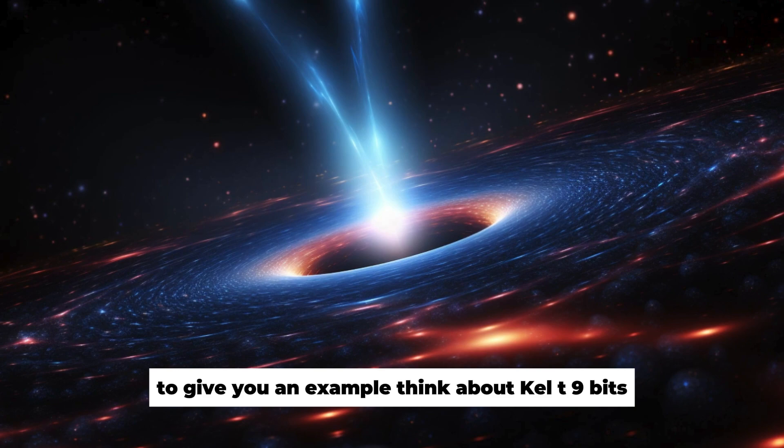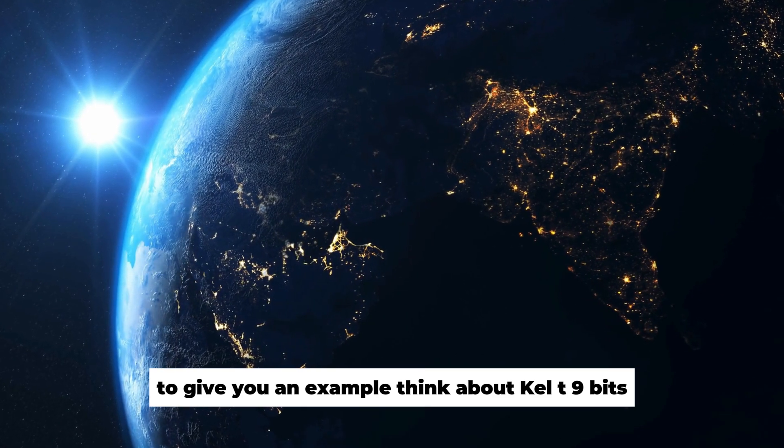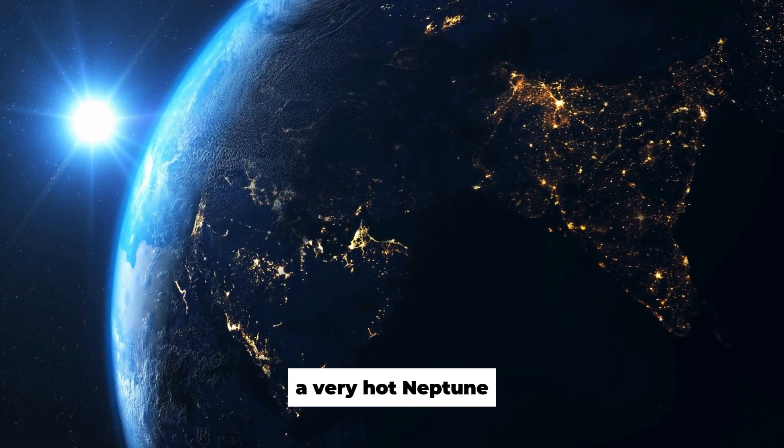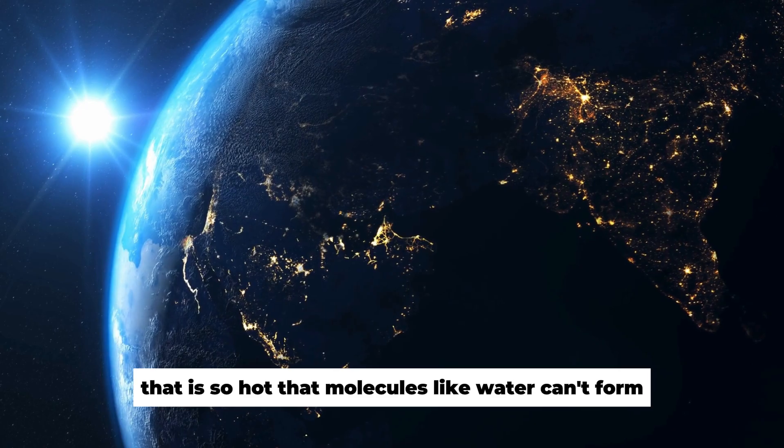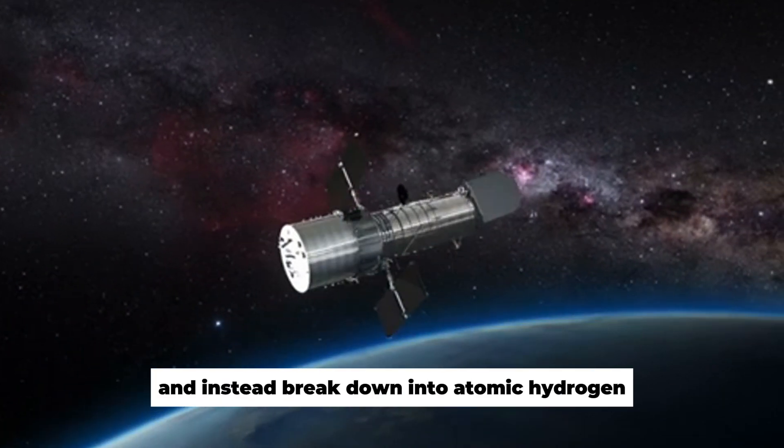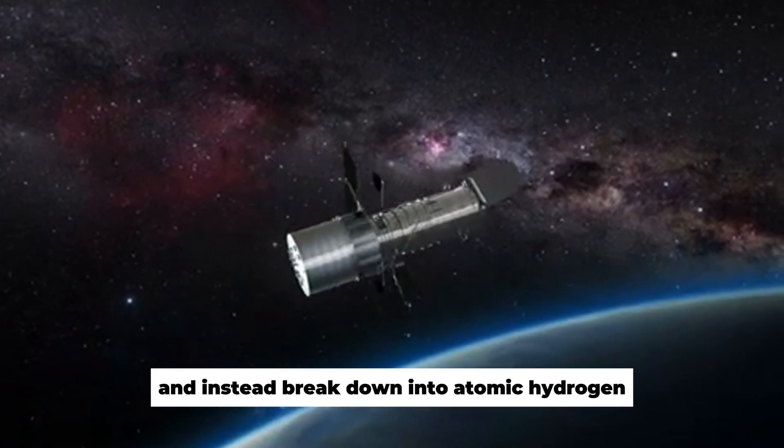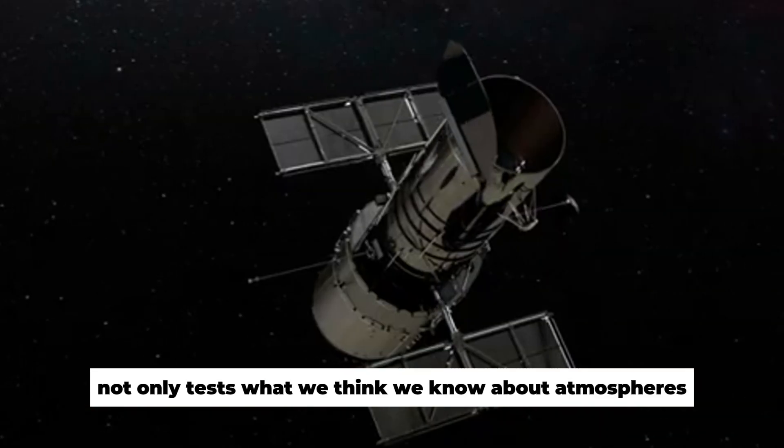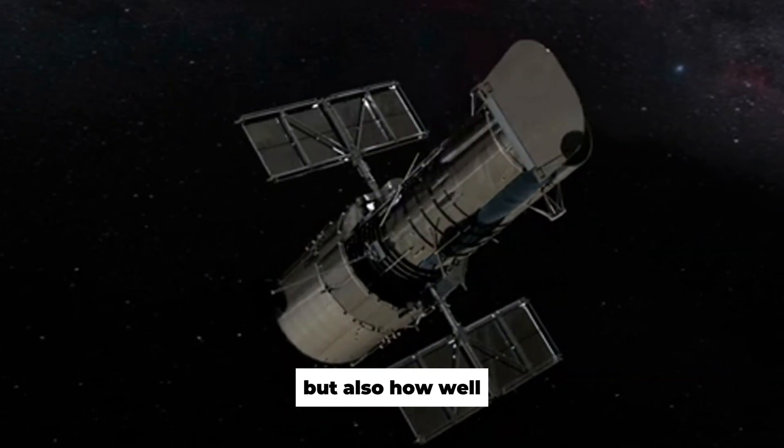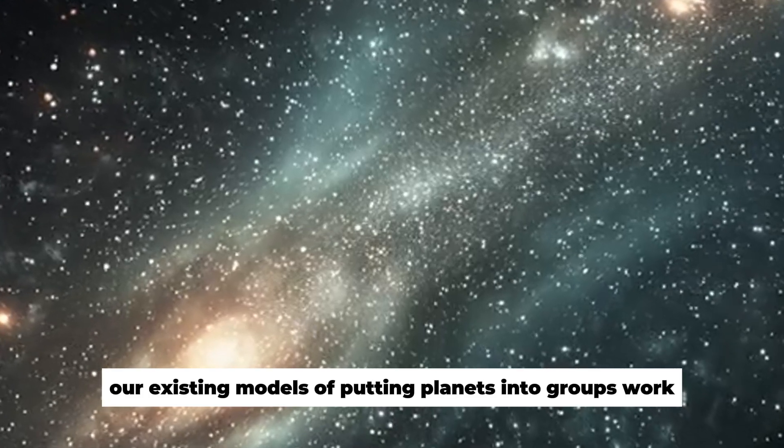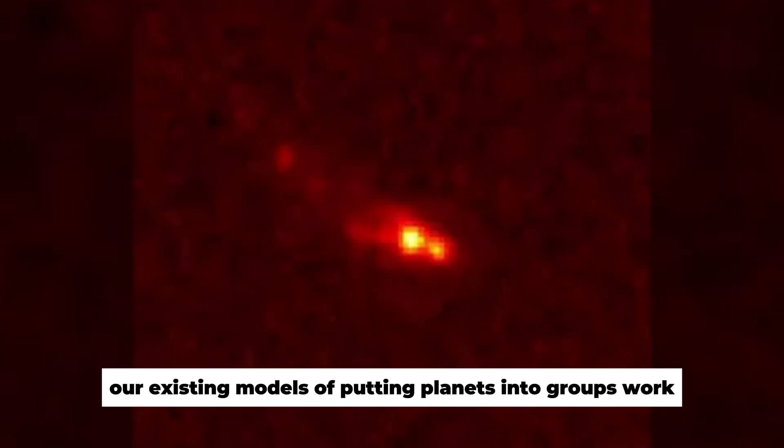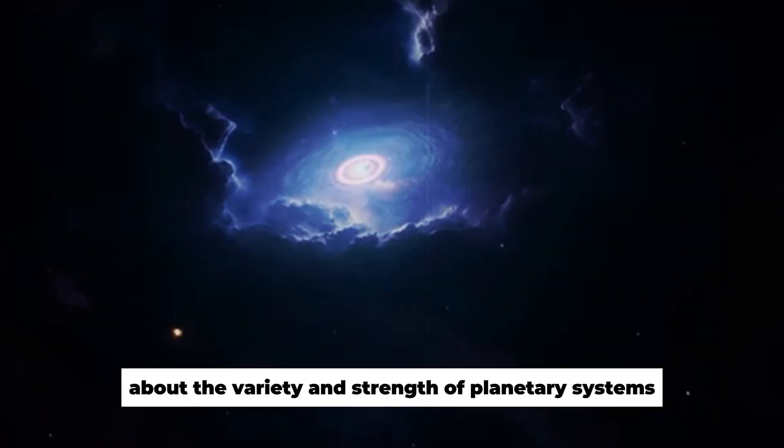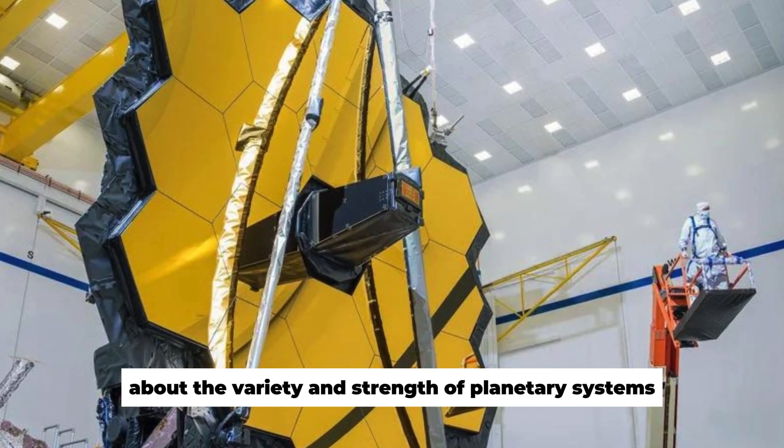To give you an example, think about KELT-9b, a very hot Neptune that is so hot that molecules like water can't form and instead break down into atomic hydrogen. Observing these planets not only tests what we think we know about atmospheres, but also how well our existing models of putting planets into groups work. Extreme conditions bring up important questions about the variety and strength of planetary systems all over the world.